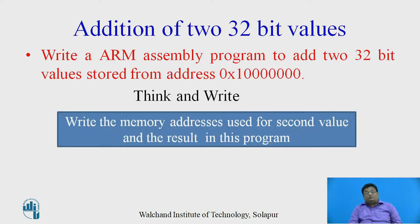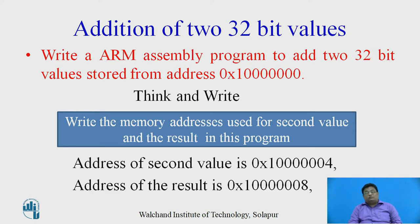Now, think and write the memory addresses used for the second value and the result in this program. The address of the second value is 0x10000004, because to store the first value, 4 memory locations are required (locations 0 to 3). To store the second value, locations 4 to 7 are used, and the result will be stored from 0x10000008 onwards.